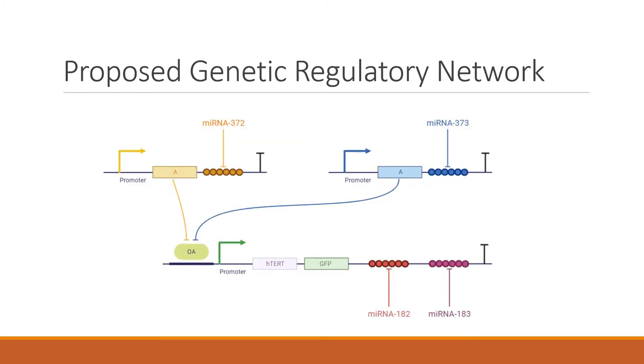This was the proposed genetic regulatory network that aims to do the job. Here we have both of our biomarkers for replicative senescence, and they are repressing a repressor A that we don't know, and that repressor is repressing our output. So it is a double negation here, and this is an AND gate. And here we have the NOR gate with our two biomarkers for oncogenic senescence.